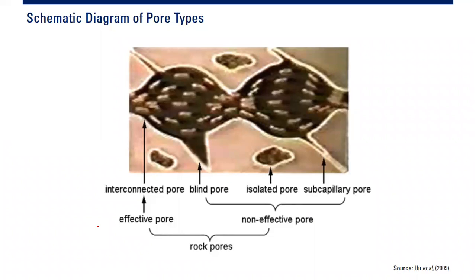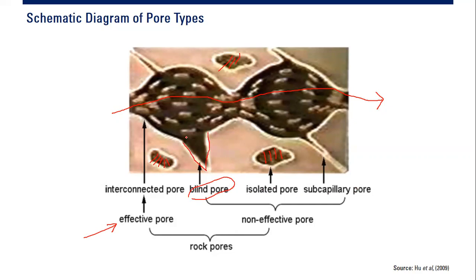This schematic diagram shows different pore types. Interconnected pores allow fluid to flow through them and are the effective pores. Some pores are isolated — in this diagram the isolated pores are smaller than the connected pores. Another type is the blind or dead-end pore, where fluid enters but cannot pass through, creating a dead zone.